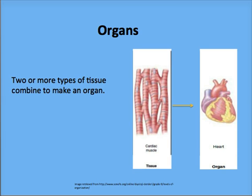Two or more types of tissue combine to make an organ. The heart contains many types of tissue, such as muscle tissue, nervous tissue, and adipose tissue.